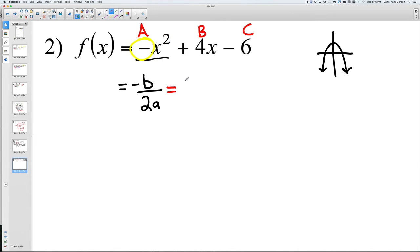And then you have two times a. This negative, there's no number in front of it, but if there is no number it's always one. So in this case it's going to be negative one. So we have negative four divided by two times negative one, which is negative two.